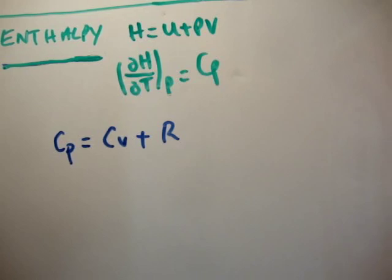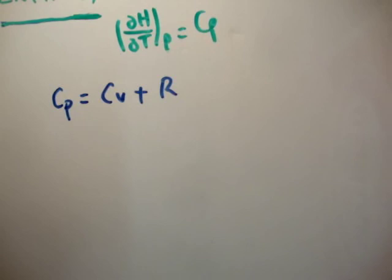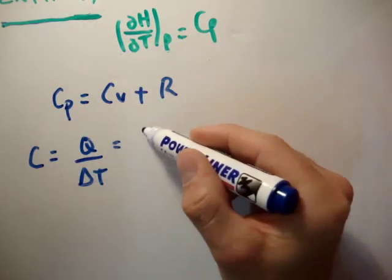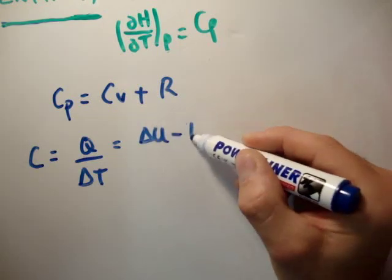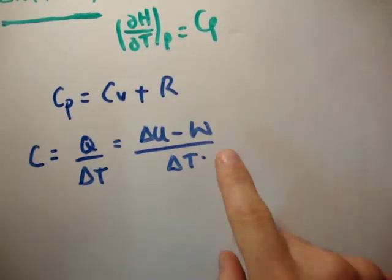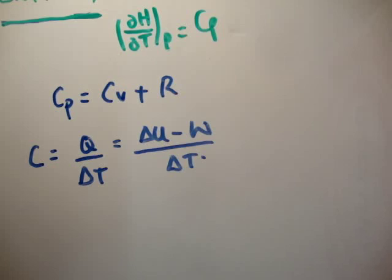We start with the definition of the heat capacity. I did discuss this in my video on heat capacities, but I didn't go into much detail because it wasn't necessary then. We know that the heat capacity, capital C, is equal to Q over the change in temperature, or equal to the change in internal energy minus the work done. There are two cases: one when the work is equal to zero, and two when it is not. I'm going to assume there is no electrical work — there is no work like that from a battery, for example. The only work we're going to have in this case is compression or expansion work.